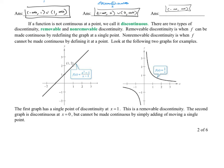Looking at the first graph of x squared minus one over x minus one: it's a nice line except it has an open circle at the point (1, 2). If we came in and defined it at that single point by closing the circle, we can make the function continuous — that is called a removable discontinuity. In contrast, one over x has a vertical asymptote at x equals zero. There is no single point we could place at x equals zero to connect both sides of the graph, making it continuous.